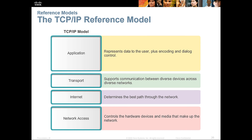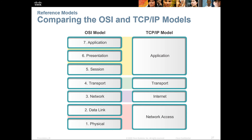Here we have the TCP/IP reference model, very similar to the OSI. In TCP/IP, layers 7, 6, and 5 are combined into one Application layer. Transport is the same. Internet is the same as Network. They also combine the Physical and Data Link into Network Access.